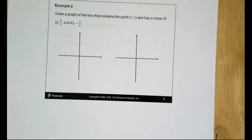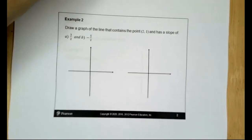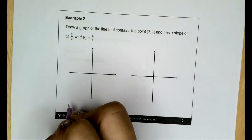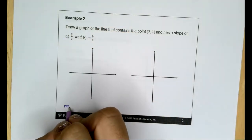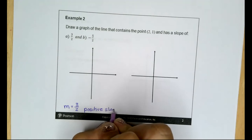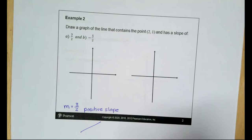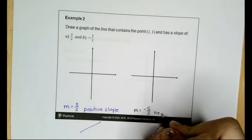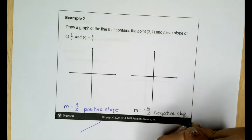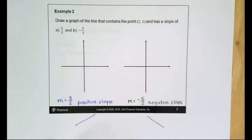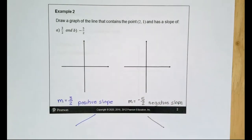Draw a graph of the line that contains the point (2, 1) and has a slope of 3/2 or a slope of negative 5/2. A positive slope like m = 3/2 always goes up from left to right — think of reading a book in English, left to right. Positive slopes go up from left to right; negative slopes go down from left to right.